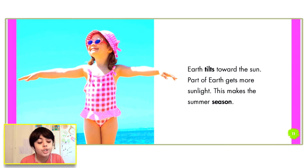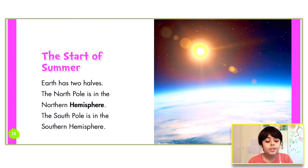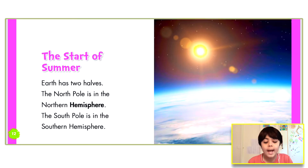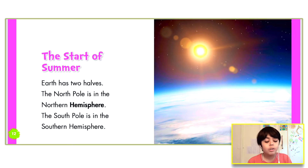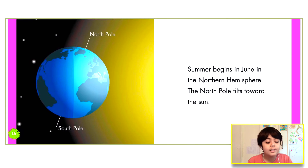Part of Earth gets more sunlight. This makes the summer season — the start of summer. Earth has two halves. The north pole is in the northern hemisphere. The south pole is in the southern hemisphere. Summer begins in June in the northern hemisphere.